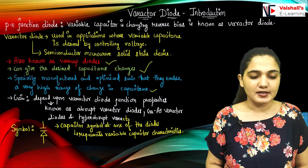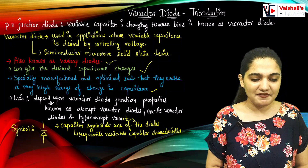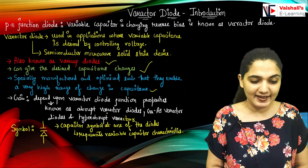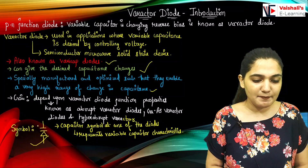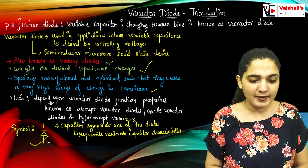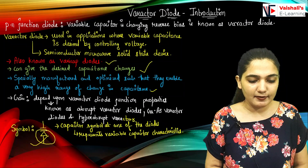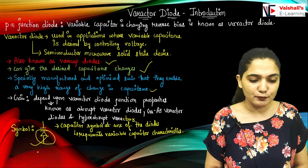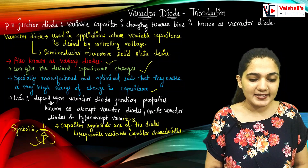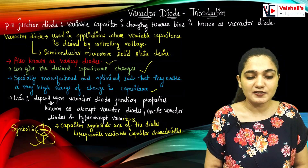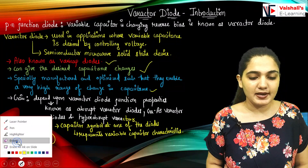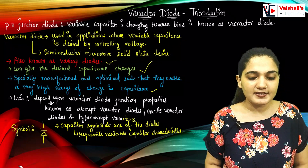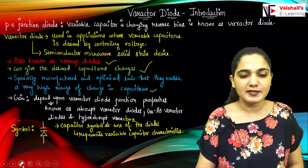Now, what is the symbol of the varactor diode? In the symbol, you can see we have the symbol of a diode and also the symbol of a capacitor. If you remember, the LED symbol was one emitting out light, represented by arrows showing light output. Here we have a capacitor representation, indicating that this diode is used as a variable capacitor or varicap. The capacitor symbol at one end of the diode represents the variable capacitor characteristics of the diode.